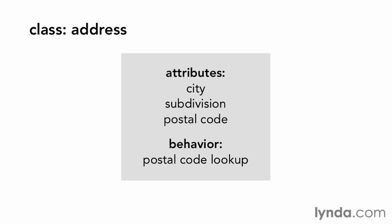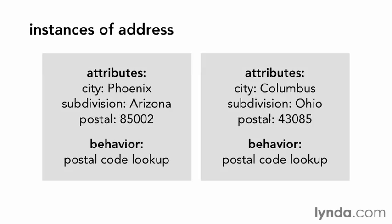Therefore, any object of class address will have those attributes and behavior. Conceptualize two objects that are instances of an address. As each object is an address, I know that they should have at least a city and subdivision.